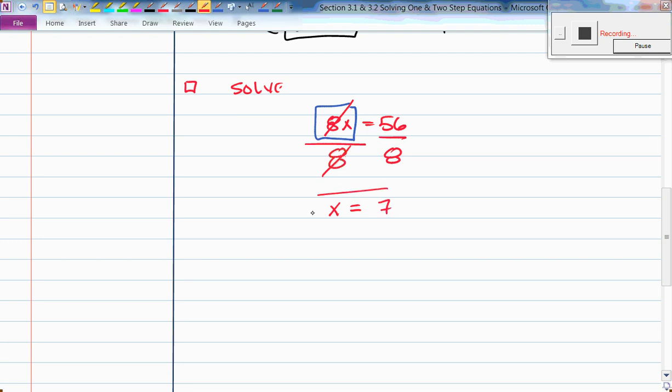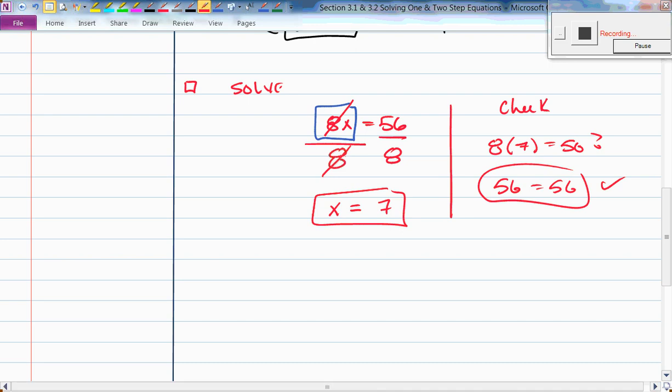So I need to divide both sides of my equation by 8. That gives me a factor of 1, because 8 divided by 8 is 1. That leaves me with x equals 7. I think this is my answer, and I'm going to check. 8 times 7 equals 56. It sure is. I have a true statement, so I must have done it correctly.